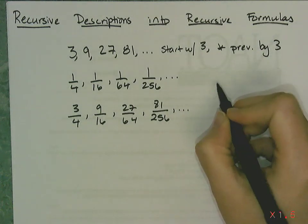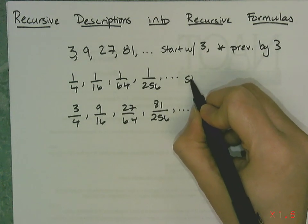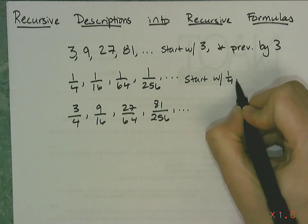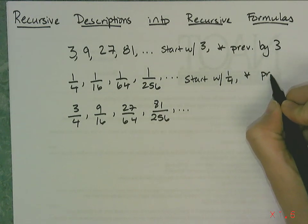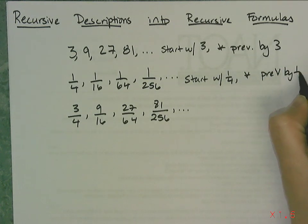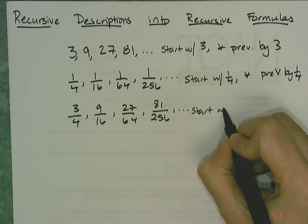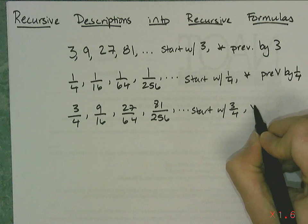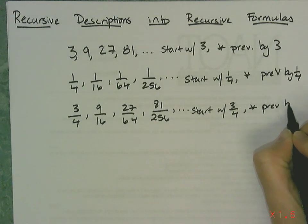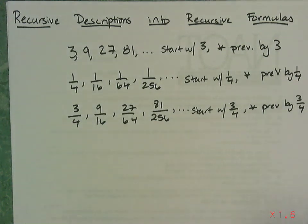If I write similar rules for all these, this one is start with 1/4, multiply previous by 1/4, and this one is start with 3/4, and then multiply previous by 3/4.